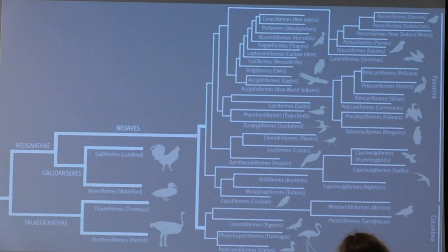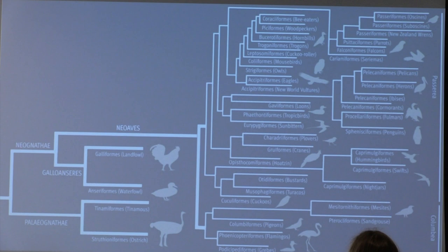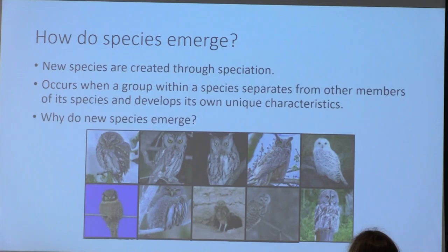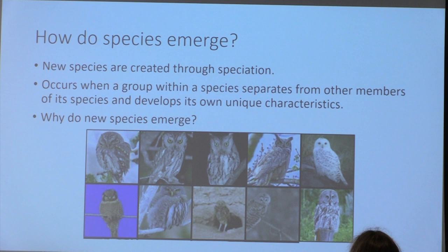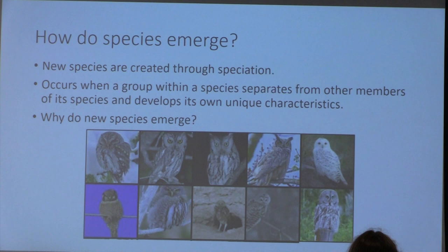Birds have a lot of different species with many divergences, beginning first with new world and old world birds. How do those species emerge? New species are created through a process of speciation, which occurs when a group within a species begins to separate and embarks on an evolutionary divergence, developing unique characteristics. What are some reasons a new species would begin to emerge?